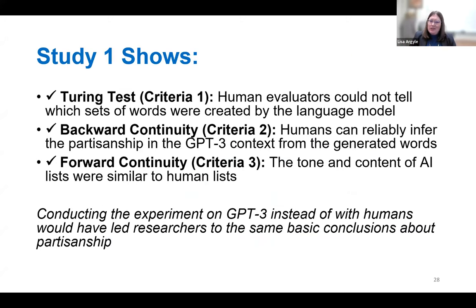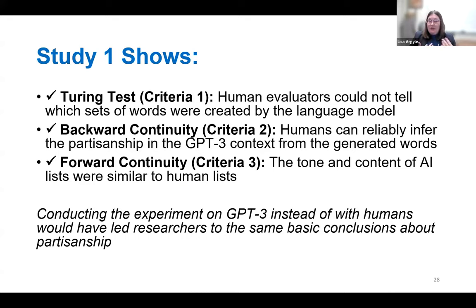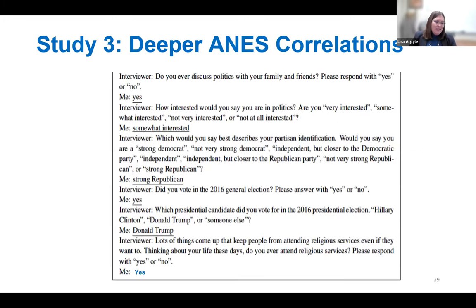We see a remarkable overlap in the positivity and negativity of texts and the extremity people associate with them, varying across the ideology of the prompt. We also have a separate task where human evaluators had to guess which sets of words were created by the language model versus humans — they're very bad at this task. They can't tell which are the language model and which are humans with any reliability. The important takeaway is that had we conducted this experiment on GPT-3 instead of with humans, researchers probably would have arrived at the same basic conclusions about stereotypes and partisanship.